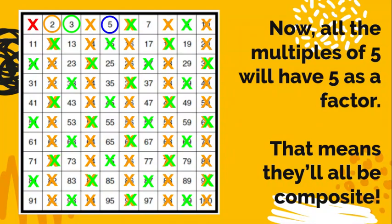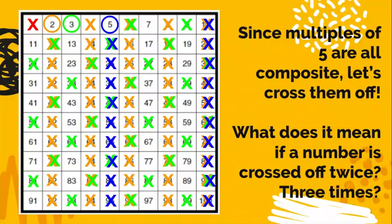We're going to use our fancy logic again. All the multiples of 5 are going to have 5 as a factor, like 10, 15, 20. All those numbers have 5 as a factor, so they have to be composite. I'm going to use my same color blue and cross them all off.